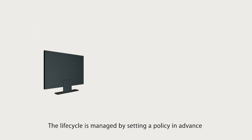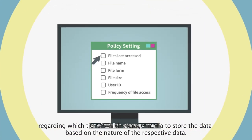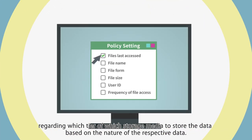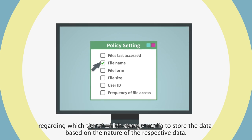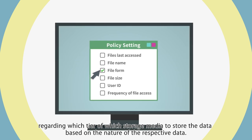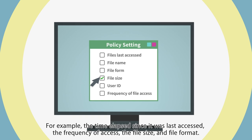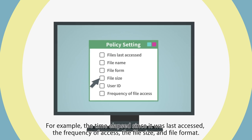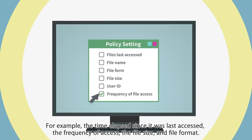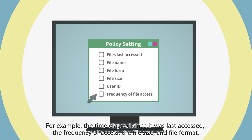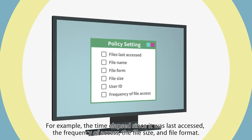This method of hierarchical management is known as lifecycle management of data. The lifecycle is managed by setting a policy in advance regarding which tier of storage media to store the data on, based on the nature of the respective data — for example, the time elapsed since it was last accessed, the frequency of access, the file size, and file format.